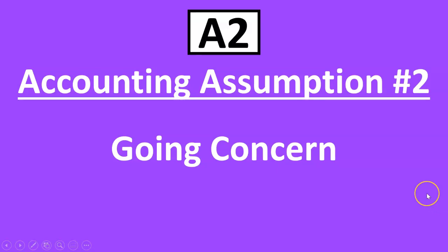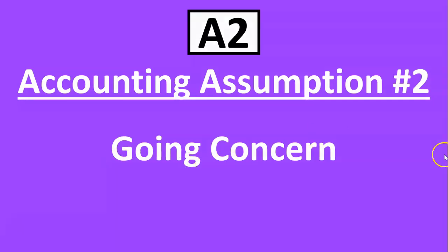Accounting assumption number two is the going concern assumption, and that sounds a bit odd. It's probably two words you do know — going and concern — that don't seem to go together and sound a bit clunky. But basically, in the olden days businesses were often referred to as concerns. What is your concern? What is your business? We're going to assume that our concern, or business, is always ongoing.